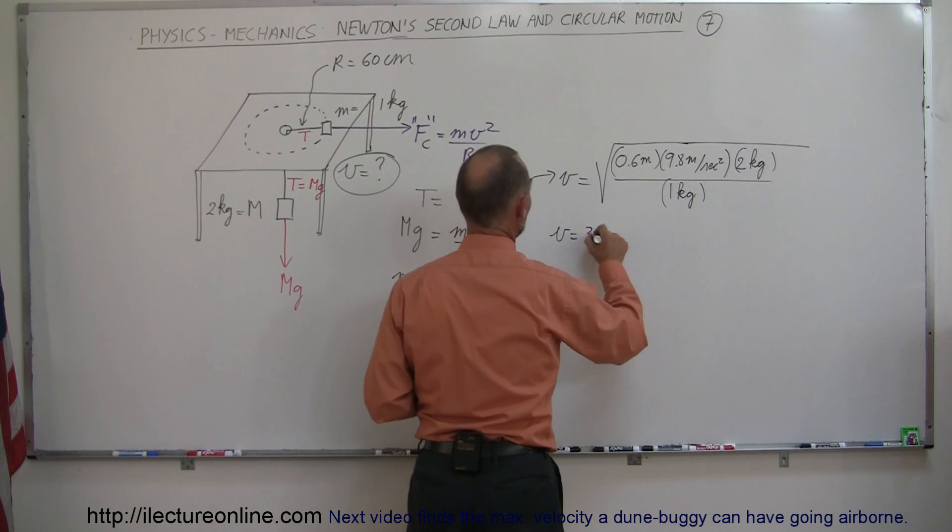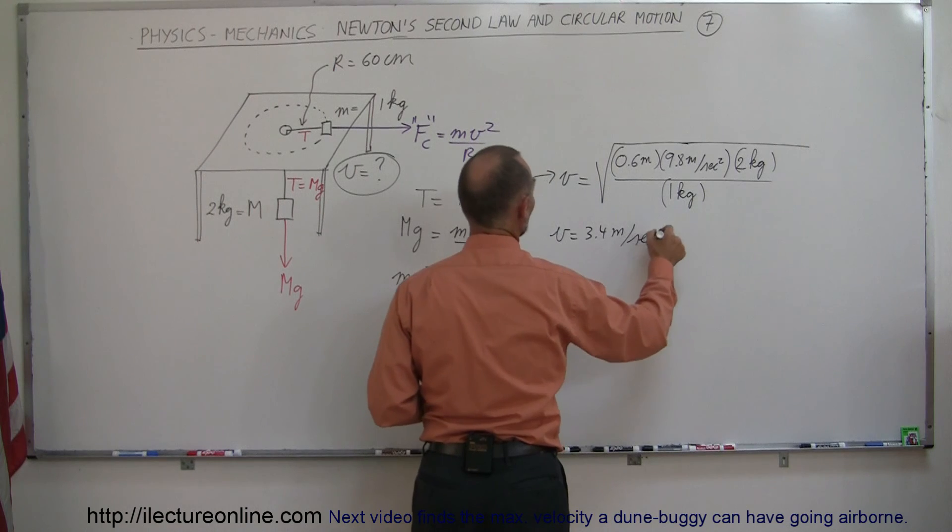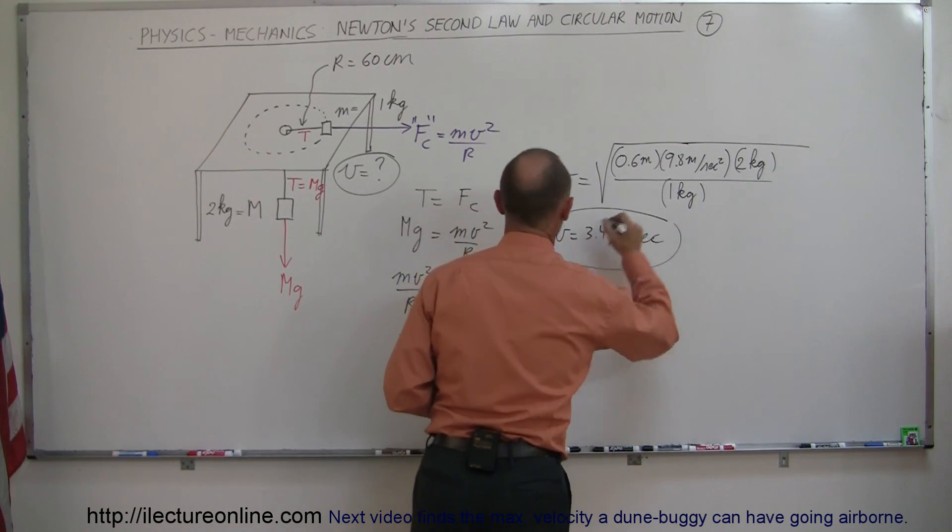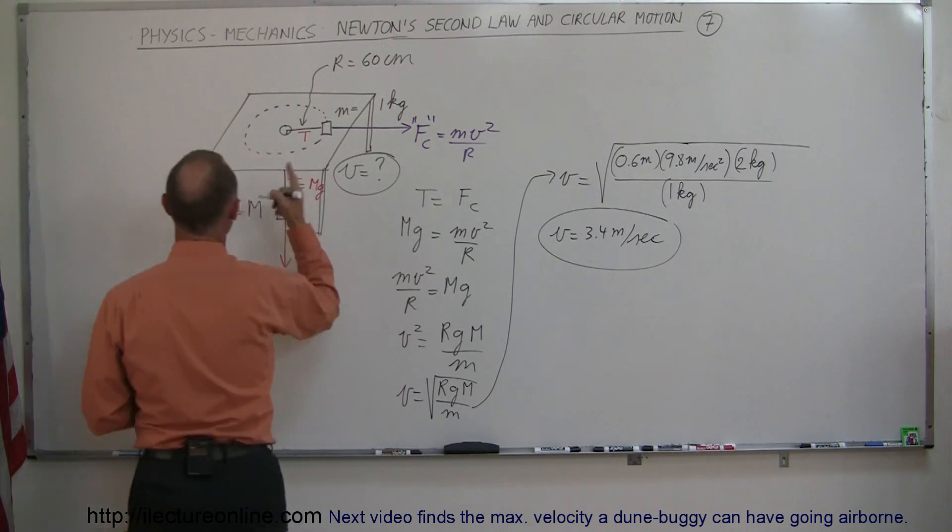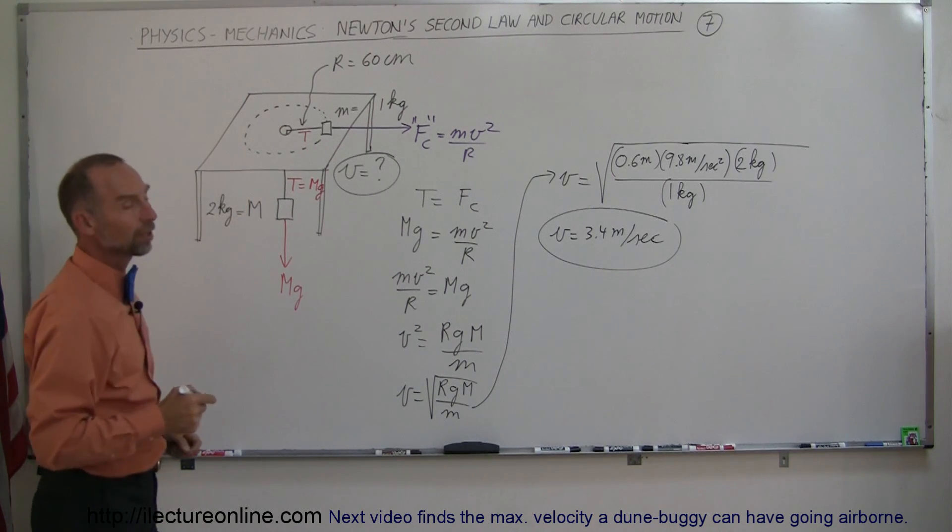So velocity equal to 3.4 meters per second is sufficient to keep this going around in a circle. And this weight will stay just where it is.